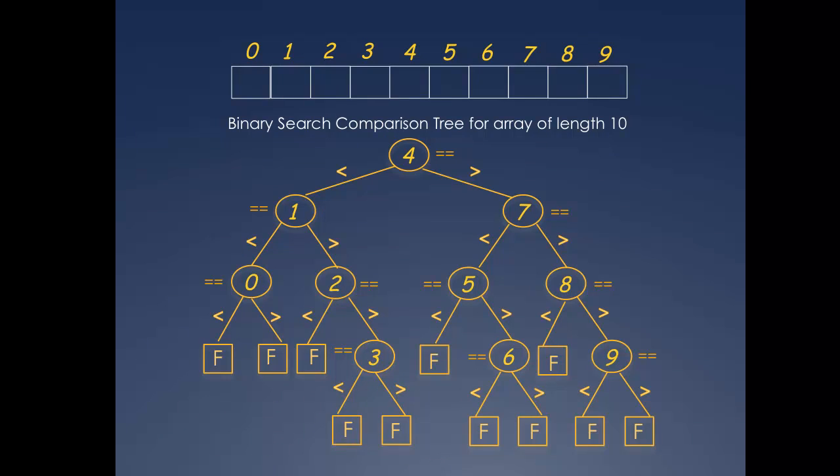The shape of the tree, which in turn determines the number of comparisons for all successes and failures, depends only on the length of the array. So we draw a comparison tree only knowing the length of the array, and we don't have to know what actual values are in the array.